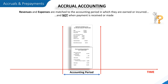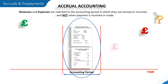But the timing of the transactions which relate to that accounting period will almost certainly never be the same as when the income is actually received or when payments are actually made. And this means we need to identify and deal with any income and expenses that fall outside of the accounting period.